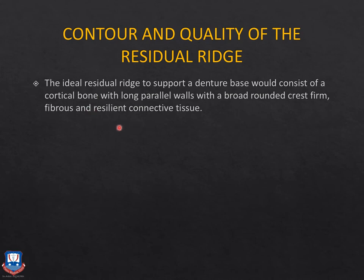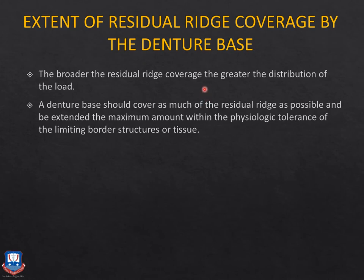Regarding contour and quality of residual ridges: the ideal ridge to support a denture base consists of cortical bone with tall rounded ridges — Atwood's classification 3 — with a broad rounded crest and firm, fibrous, resilient connective tissue. There should be no loose flabby tissue and no knife-edge ridges. The broader the residual ridge coverage, the greater the distribution of load to underlying tissues. In Kennedy's Class 1 and 2, remember the snowshoe principle. The denture base should cover as much of the residual ridge as possible, extending to the full depth of the vestibule — buccal frenum, labial frenum, lingual frenum, and alveolingual sulcus — without impinging on the limiting structures.